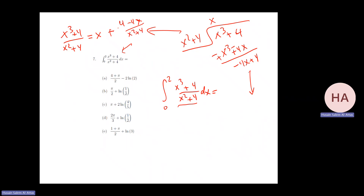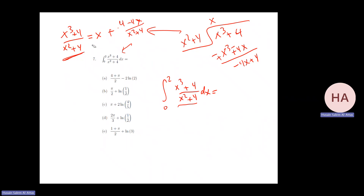If we check this, it will be x cubed plus four x minus four x plus four, which is correct. So this is what the long division does — just rewriting this function in another way. Now, in the other form, I can find the integration. That's the idea. So I have x plus four minus (4x over x squared plus four) dx.